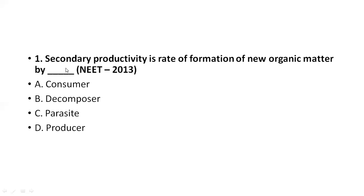Here is the very first question. Secondary productivity is the rate of formation of new organic matter by consumers. Primary productivity is by producers. Secondary productivity is the productivity we get from consumers — consumers eat the producers and give products, which we call secondary productivity. It is an indirect productivity. The correct answer is consumers.